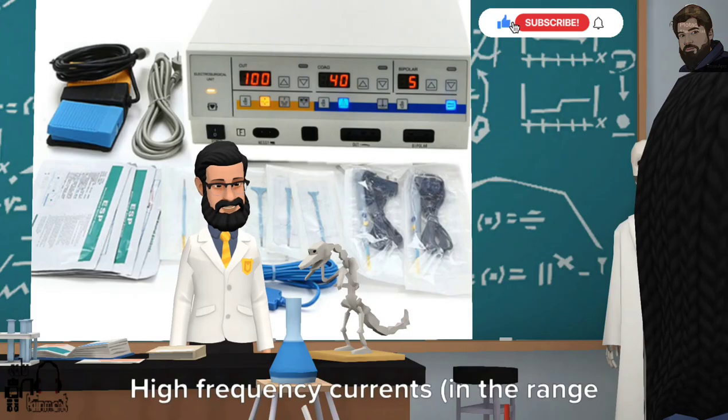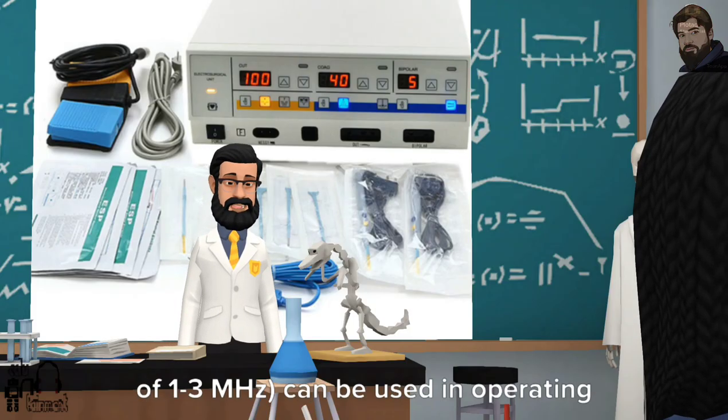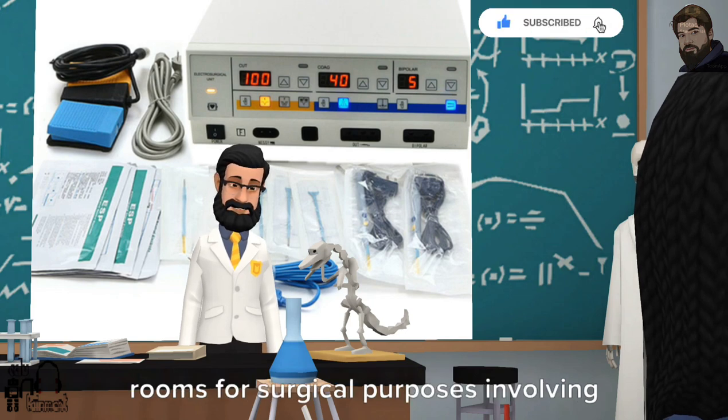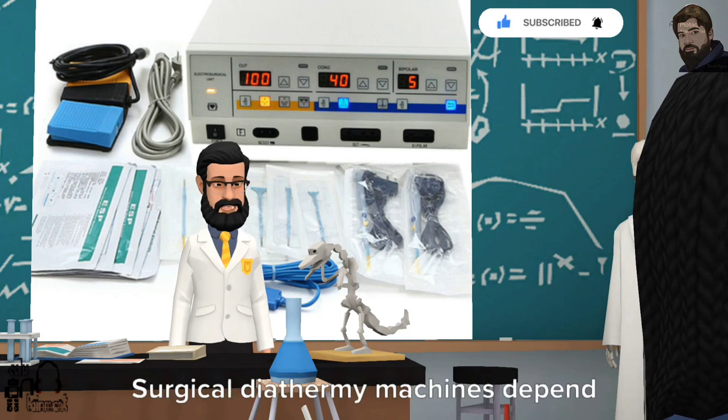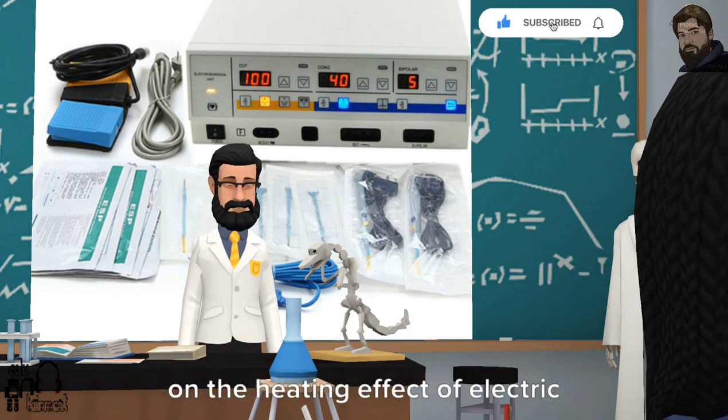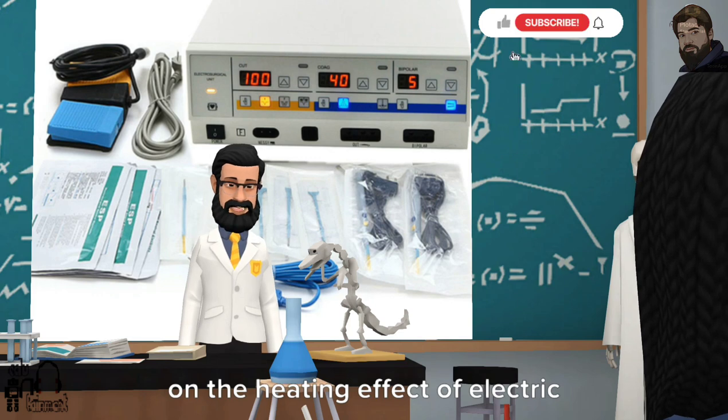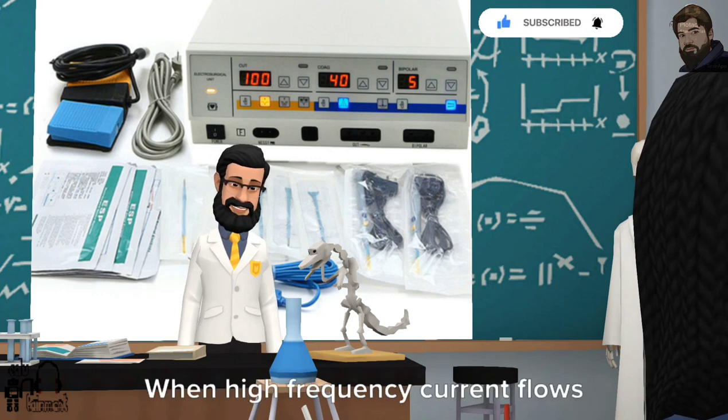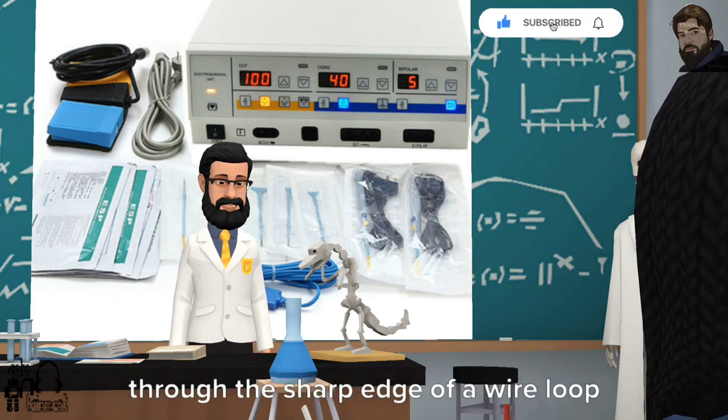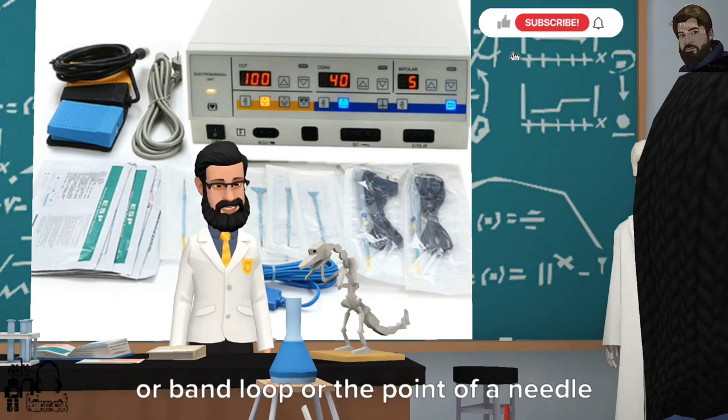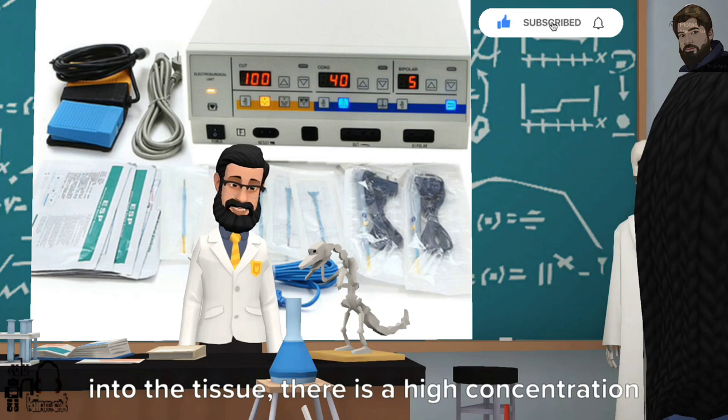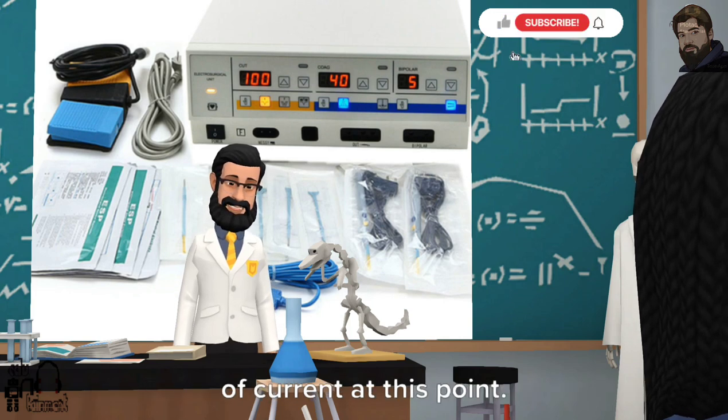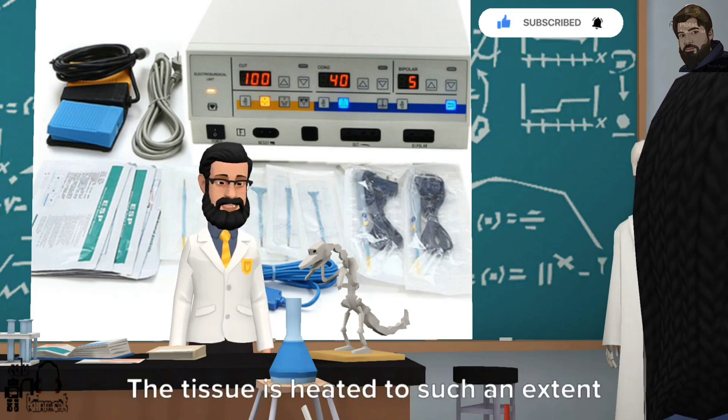What is the principle of surgical diathermy? High frequency currents in the range of 1-3 MHz can be used in operating rooms for surgical purposes involving cutting and coagulation. Surgical diathermy machines depend on the heating effect of electric current. When high frequency current flows through the sharp edge of a wire loop or band loop or the point of a needle into the tissue, there is a high concentration of current at this point.